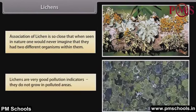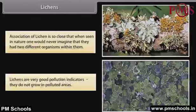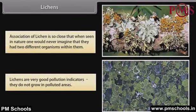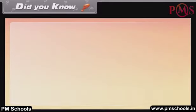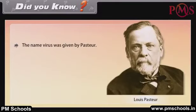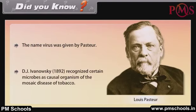Lichens are very good pollution indicators — they do not grow in polluted areas. The name virus was given by Pasteur. D.J. Ivanowski (1892) recognized certain microbes as the causal organism of the mosaic disease of tobacco.